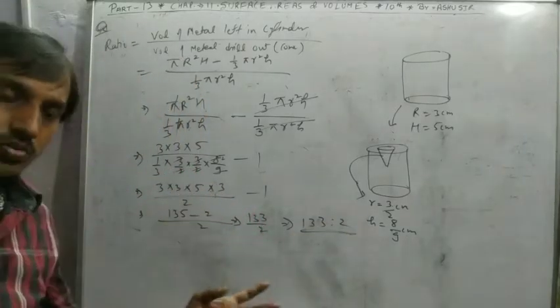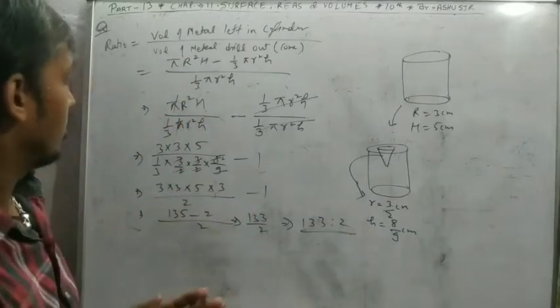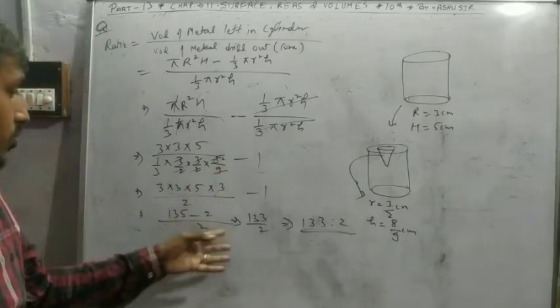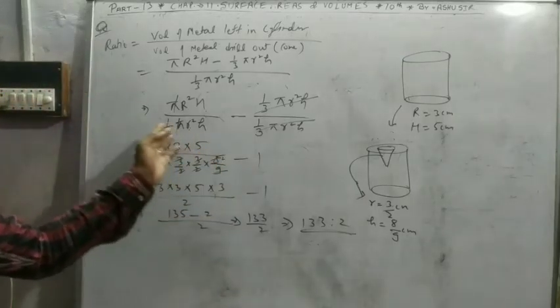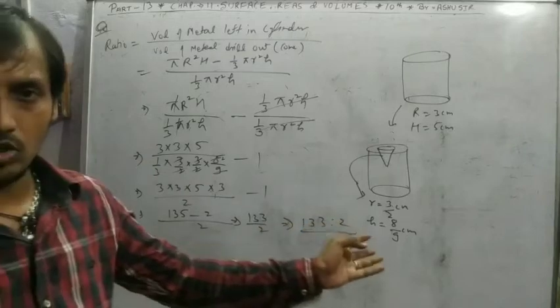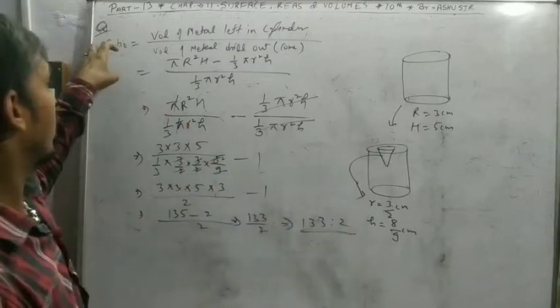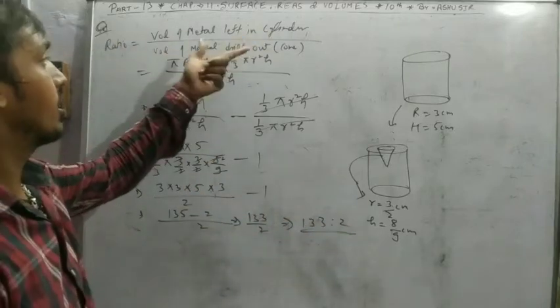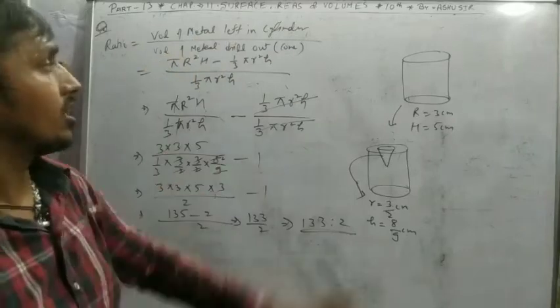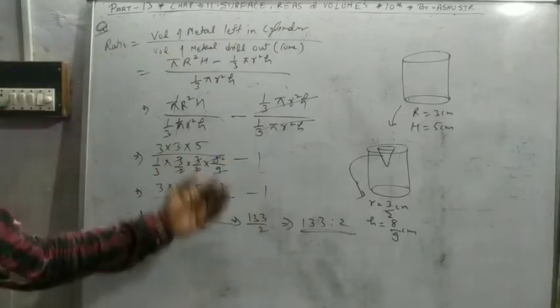This is the solution. If there are any problems with multiplication or division steps, you can solve it, but the process is correct. This is the ratio of metal left in cylinder to volume drilled out. Pause the video now.